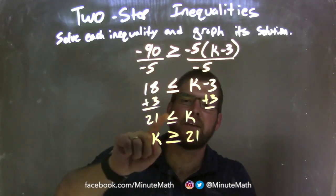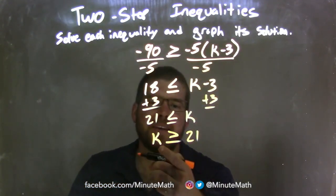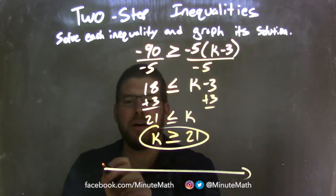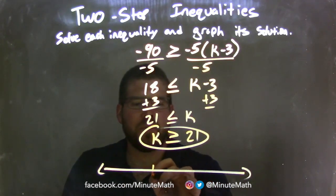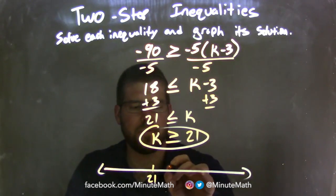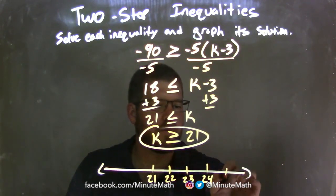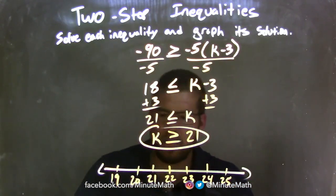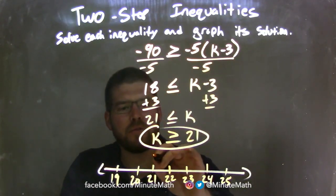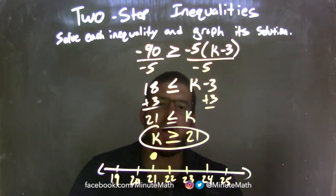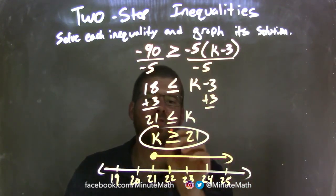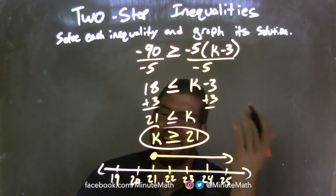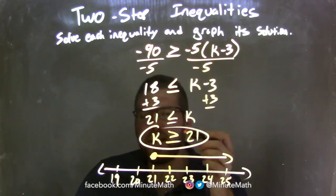k is isolated and written first, so now I take my number line and write my answer. Let's put 21 right here and go by 1s: 22, 23, 24, 25, and 20, 19. k is greater than or equal to 21, so I have a closed circle at 21, because it's equal to 21. Then I shade to the right because k is greater than 21. The equal to sign means closed circle, greater than means shade to the right — and now we're done. We have our graph that matches our final answer of k is greater than or equal to 21.